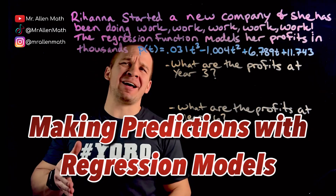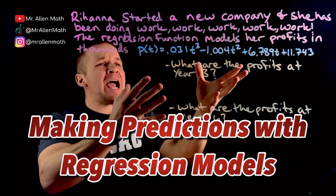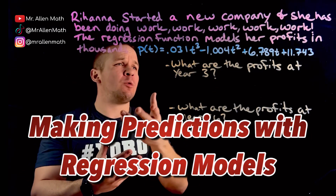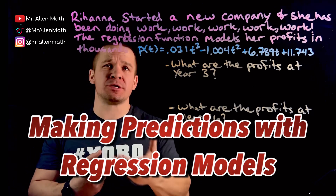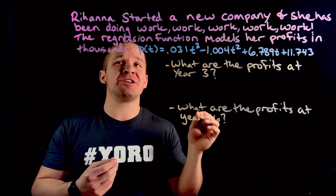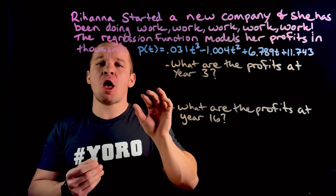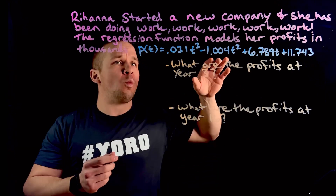What's going on dogs? Mr. Allen here. We got ourselves a dope application problem — looks like a regression model of some sort. So we got Rihanna. She started a new company and she has been doing work, work.